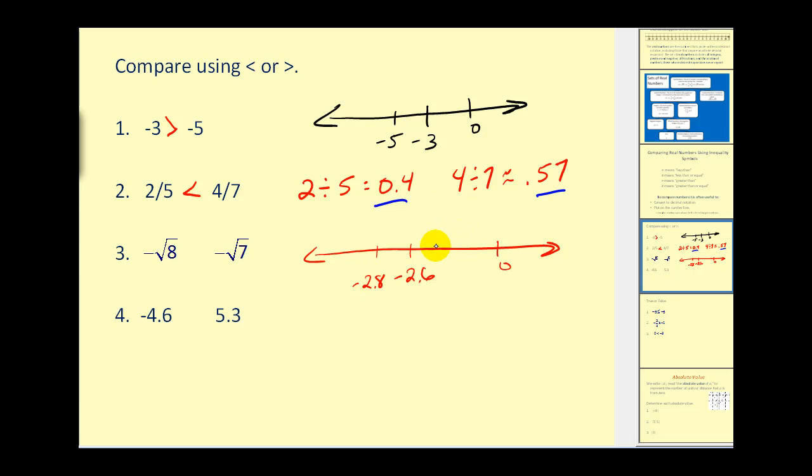Again, we know that because negative 2 might be here and negative 3 might be here, negative 2.8 is closer to negative 3. Therefore, negative 2.6 is larger, and this came from negative square root 7. So we can state that negative square root 8 is less than negative square root 7.